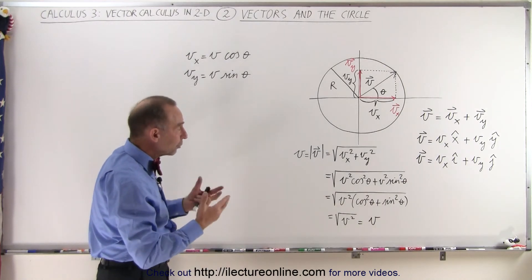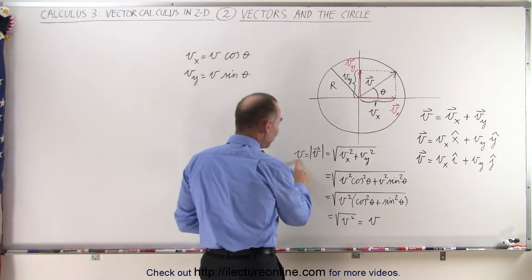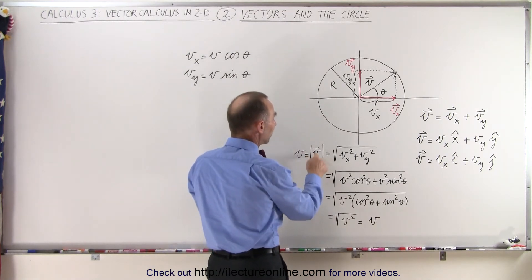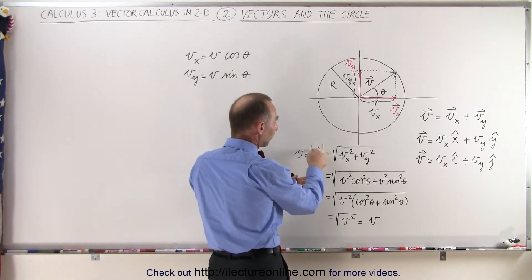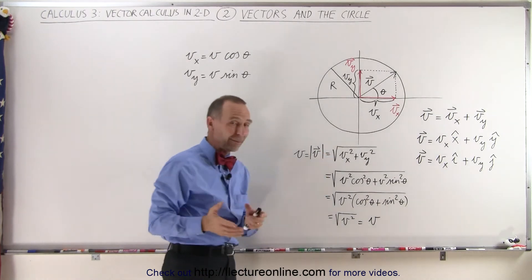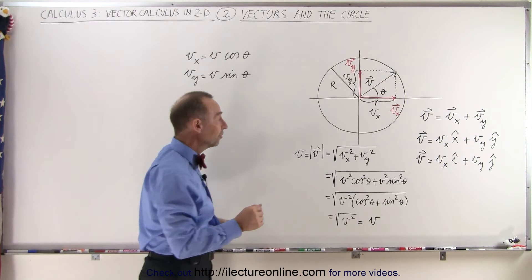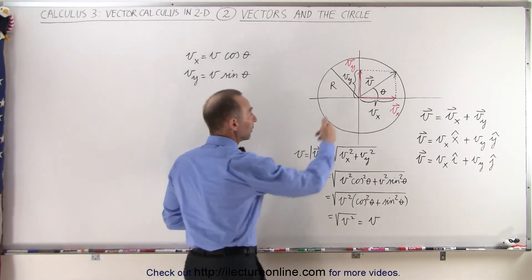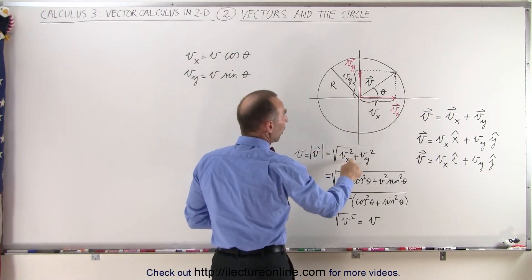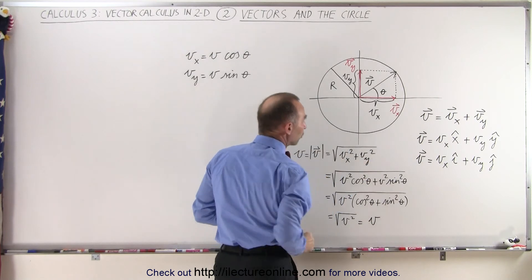If you want to find the magnitude of the vector, v without the arrow is the same as writing the vector v with absolute value signs around it. That means the magnitude of that vector — how long that vector is — and using the Pythagorean theorem, we can find that by taking the square root of the sum of the squares of the two components.